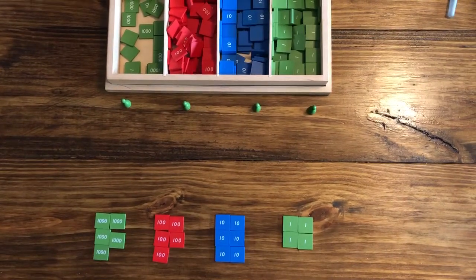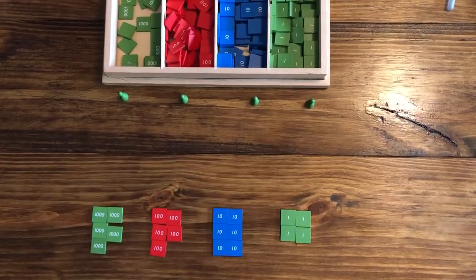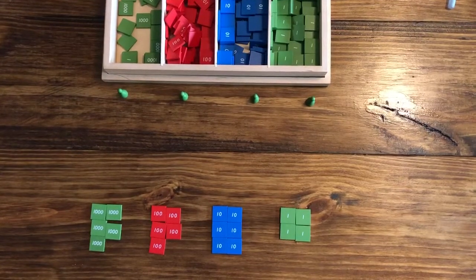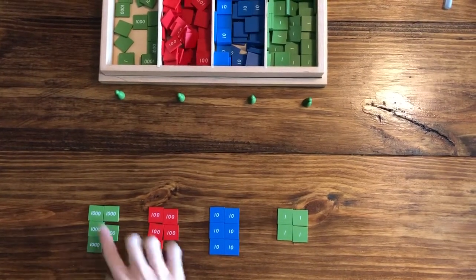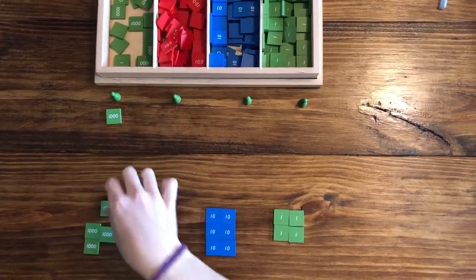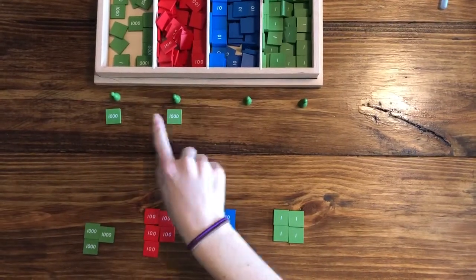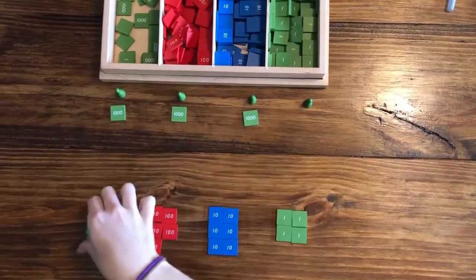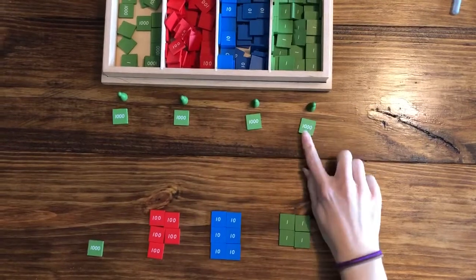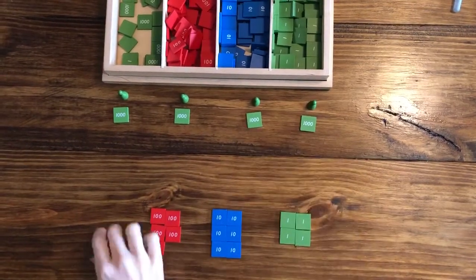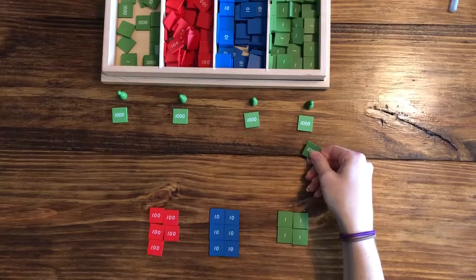So I have my four Skittles set up, and with division we always start with the thousands. So I'm going to start distributing my thousands. Each one got 1,000 and I have one left over that I can't distribute evenly.